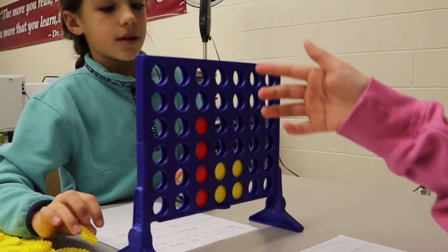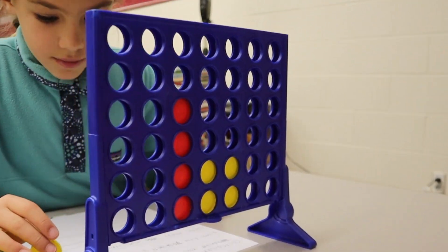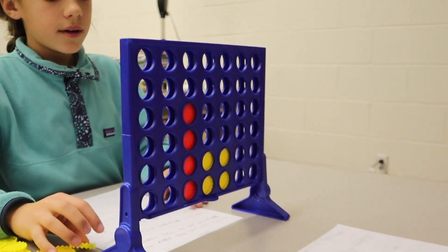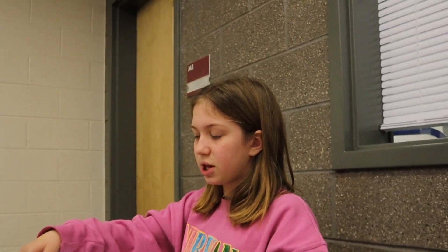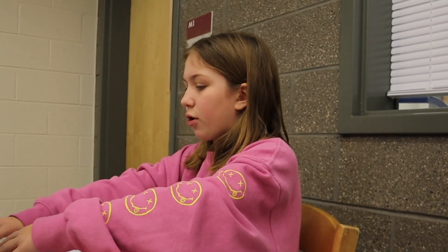And as you see that I got 4 in a row, so that means that I would win. And Lillian, since she did not get 4 in a row, she would not win. And we would start over.